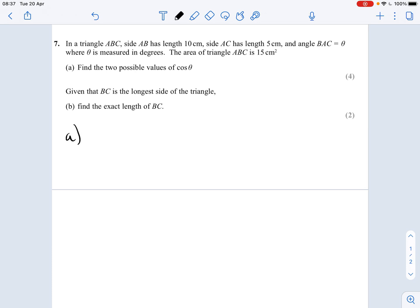So part A, let's begin by sketching this triangle. So I'm going to give it a rough sketch. So if I call this A, this B, and this C, and then let's label it the other way. Let's call this A to B, so let's put A there, B there, A to C 5 centimeters, and angle BAC, which is this one, is theta.